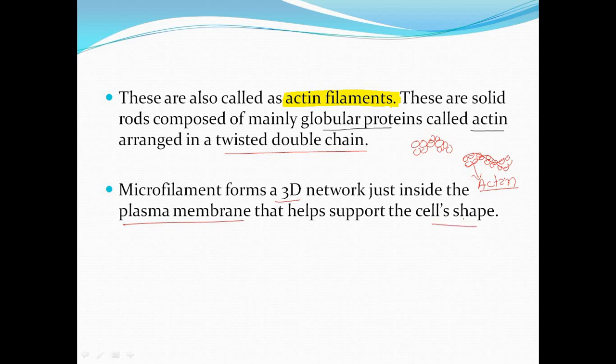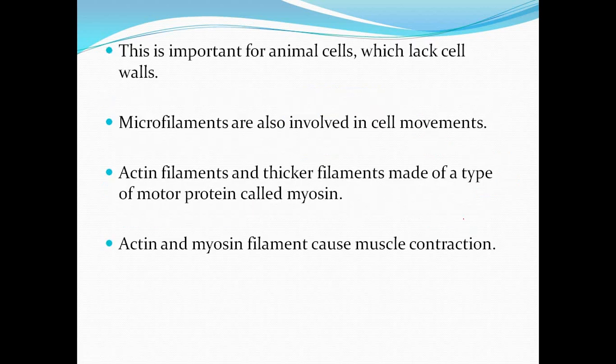They help in forming the cell shape and support the cell. This actin or microfilament is especially found in the animal cell, or the cell which lacks a cell wall. The actin filament is important for animal cells which lack a cell wall.